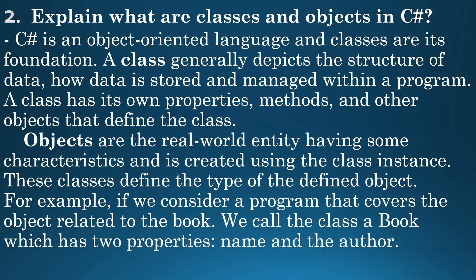Objects are the real-world entity having some characteristics and are created using the class instance. These classes define the type of the defined object. For example, if we consider a program that covers the object related to the book, we call the class a book, which has two properties: name and the author.